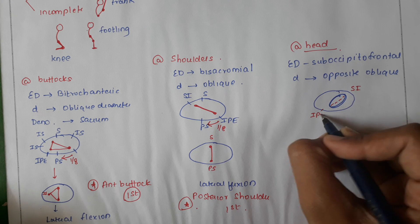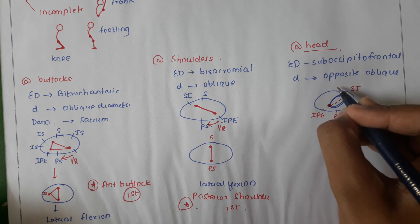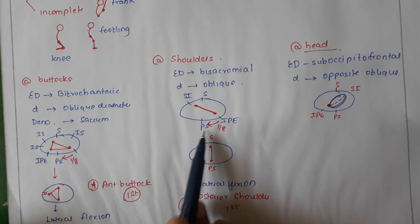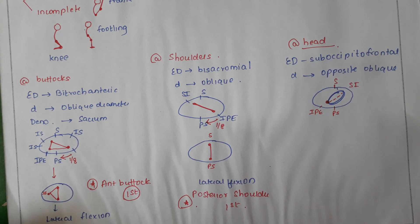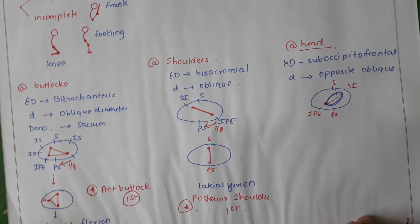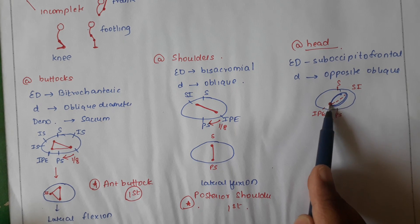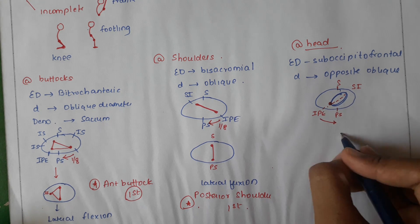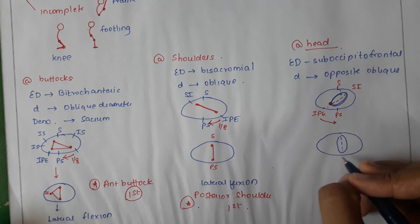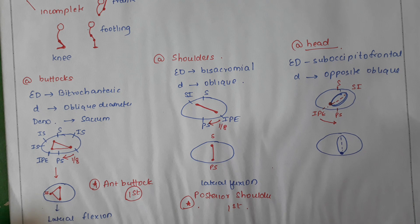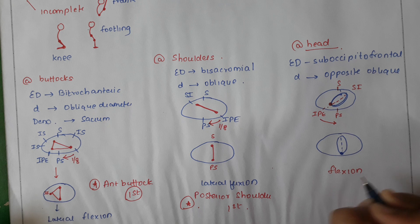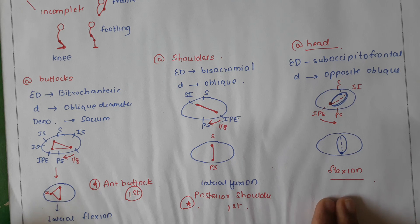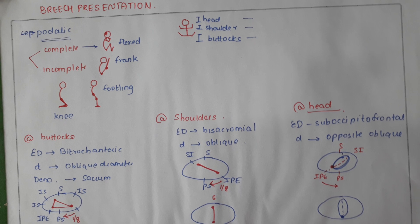The sacroiliac joint and iliopubic eminence are identified, and the occiput is lying here in this position. Compare this diagram with those of the buttocks and shoulders: there the engaging diameter was the right oblique diameter, whereas here it is the left oblique diameter. Again applying the same principle, the occiput hits the pelvic floor first and therefore has to rotate such that it comes to lie behind the pubic symphysis. Further descent occurs and delivery of the head is by flexion. These are the three important and distinct movements occurring at the buttocks, shoulders, and head for delivery in a breech presentation.